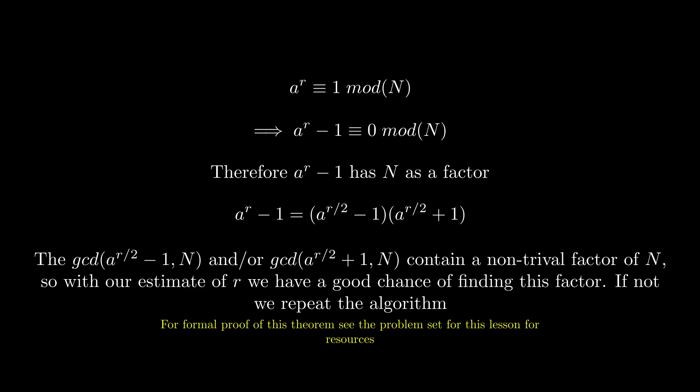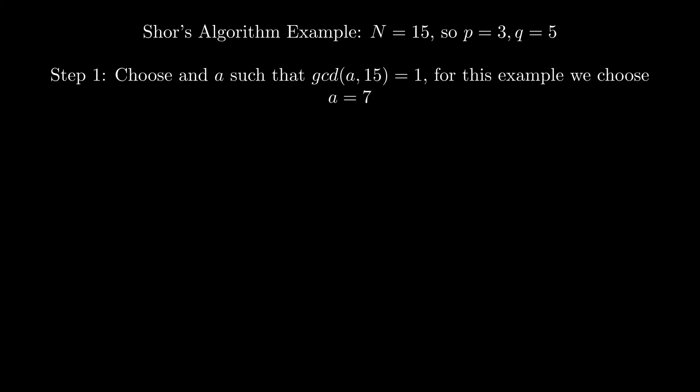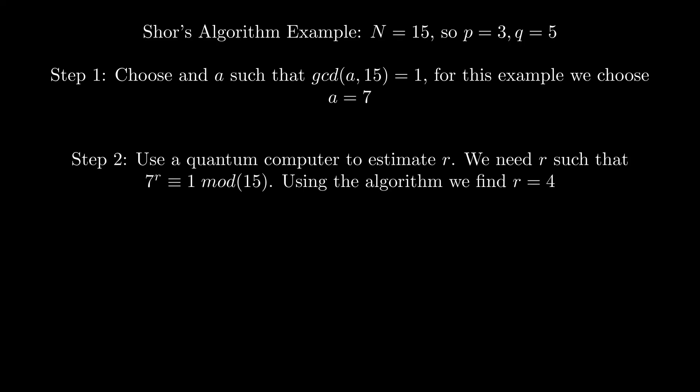Let's go through a quick example with N equal to 15, so p is 3 and q is 5. In step 1, we choose an a which is relatively prime to 15. Let's choose a equals 7. Now in step 2, we use the quantum part of Shor's algorithm to find the period r. So we need to find r such that 7 to the power of r is congruent to 1 mod 15. By using the algorithm, we find that r is equal to 4.